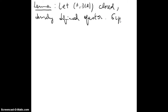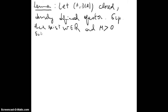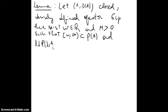Let A with domain D(A) be a closed, densely defined operator. And suppose there exists omega and M greater than 0 such that the interval (omega, infinity) is included in the resolvent set of A, and the norm of lambda R(lambda, A) is less than or equal to M, for all lambda greater than or equal to omega.